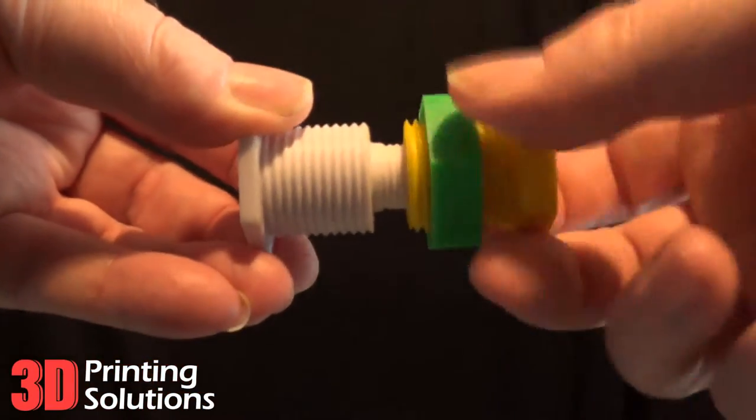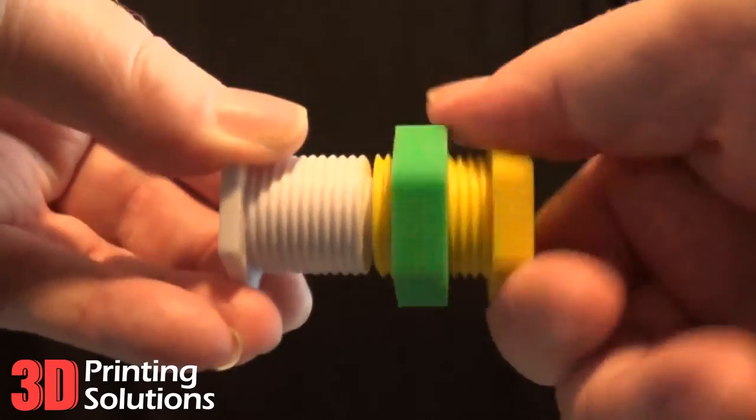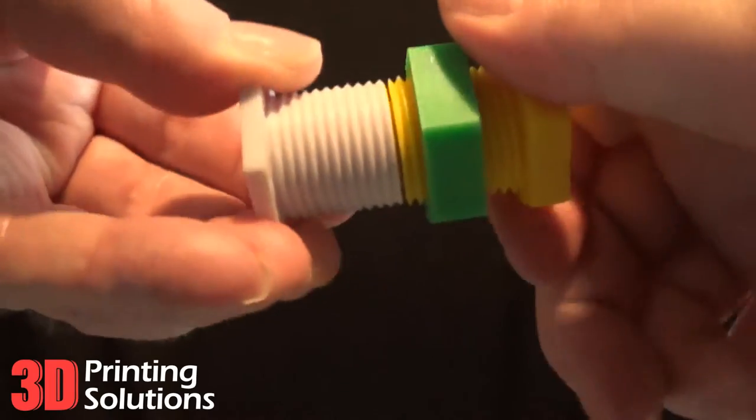We were blown away. The 3D print of the scanned part screwed straight into the original half, and the outer nut screwed over the outer bolt joint without any resistance.